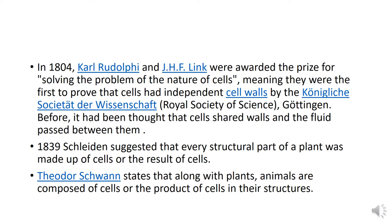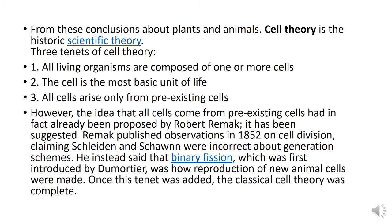In 1839, Schleiden suggested that every structural part of a plant was made up of cells or the result of cells. Theodore Schwann stated that, along with plants, animals are also composed of cells or the product of cells in their structure. From this conclusion arose the historic scientific theory of plant and animal cell theory.